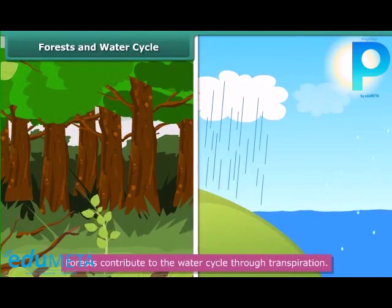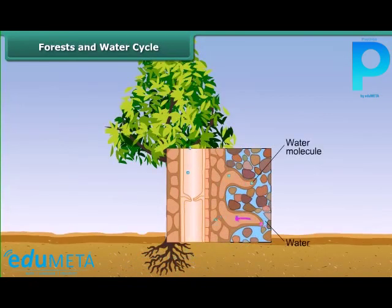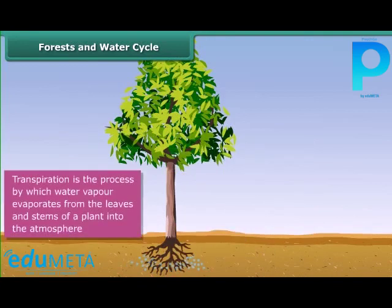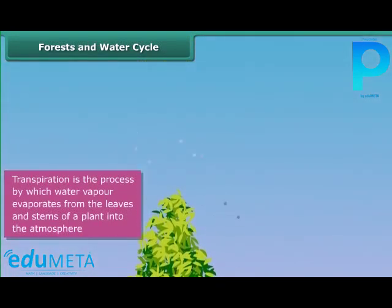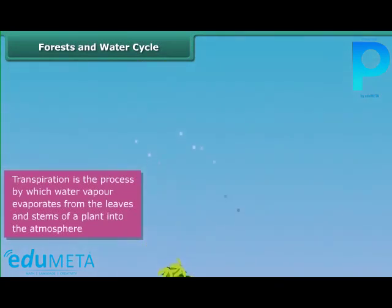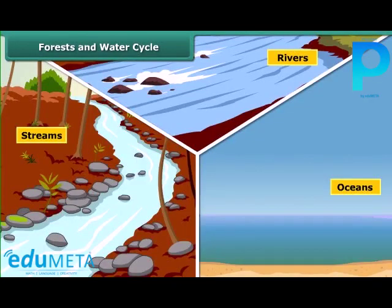Forests play an important role in the water cycle as well. They contribute to it through transpiration — the process by which water vapor evaporates from the leaves and stems of a plant into the atmosphere. It then rises up in the air. When it comes in contact with a cooler surface, it condenses and forms clouds. When the water droplets in the clouds become heavy, they fall down as rain. The rainwater flows into streams, rivers, and oceans, thereby completing the water cycle.